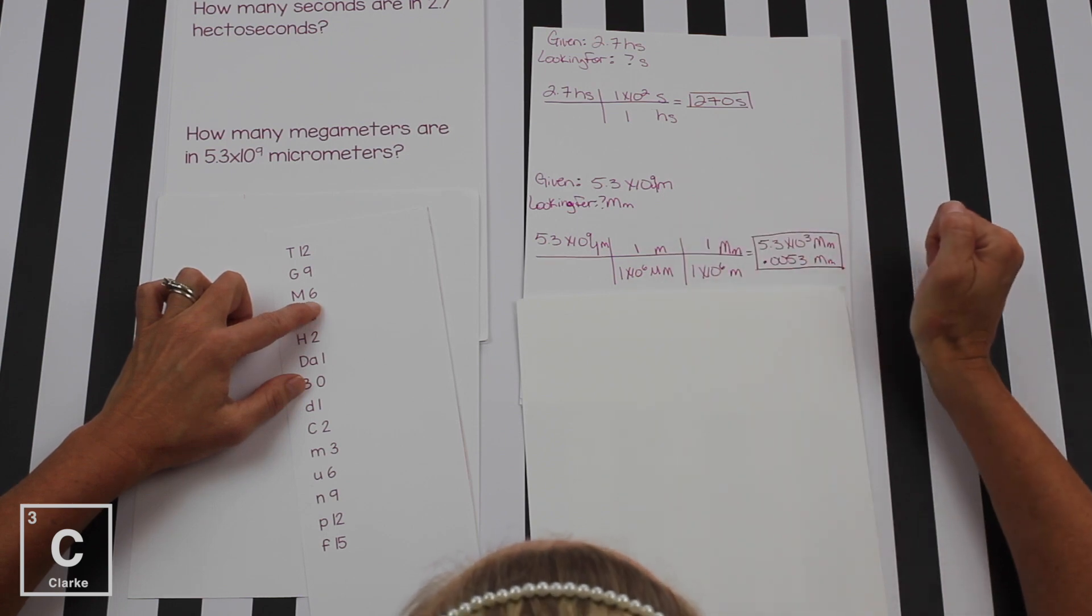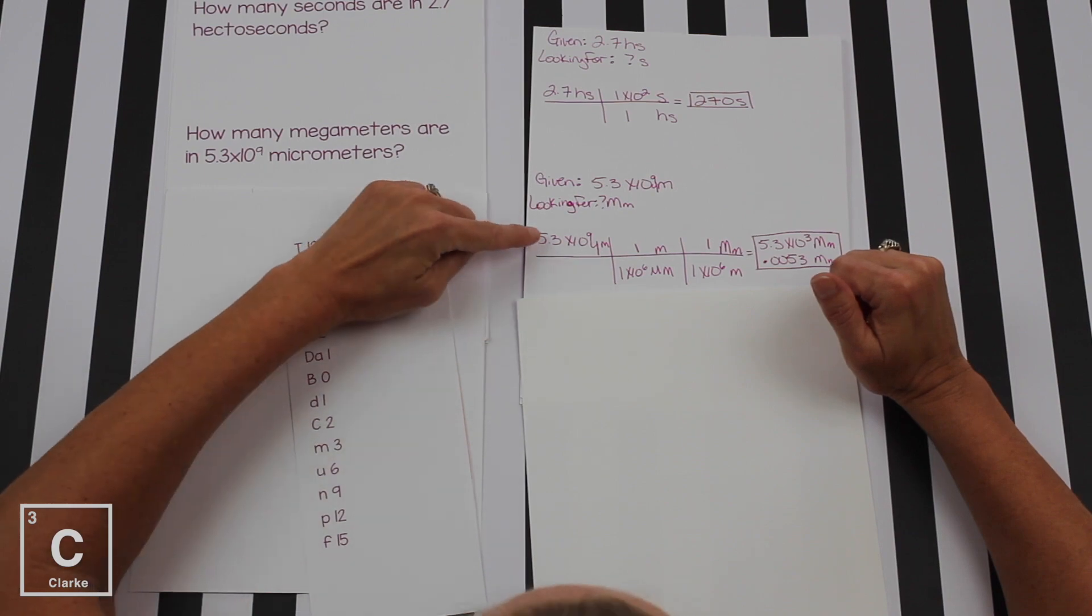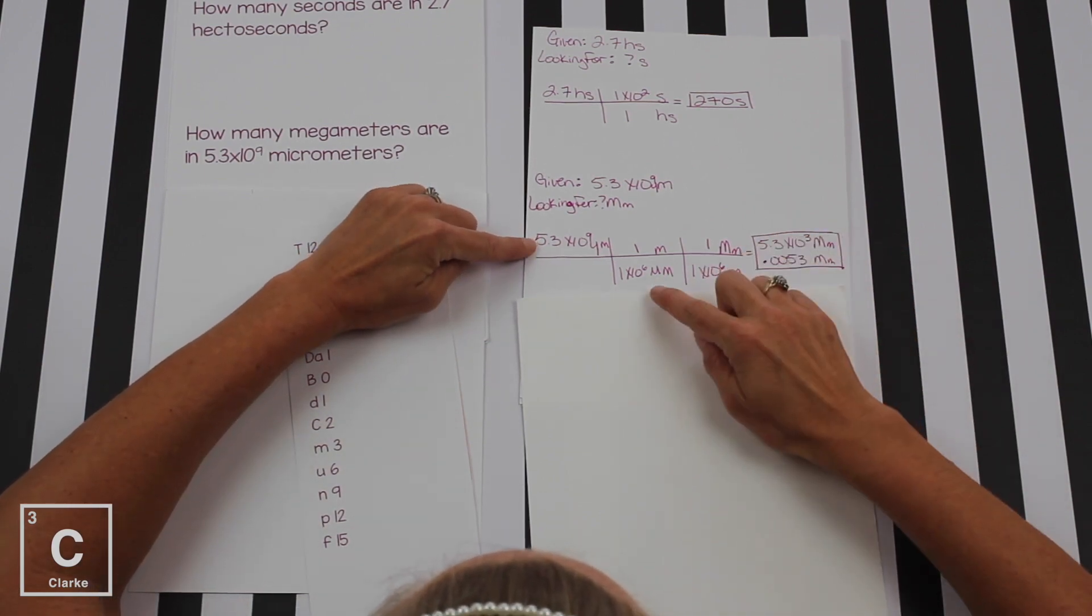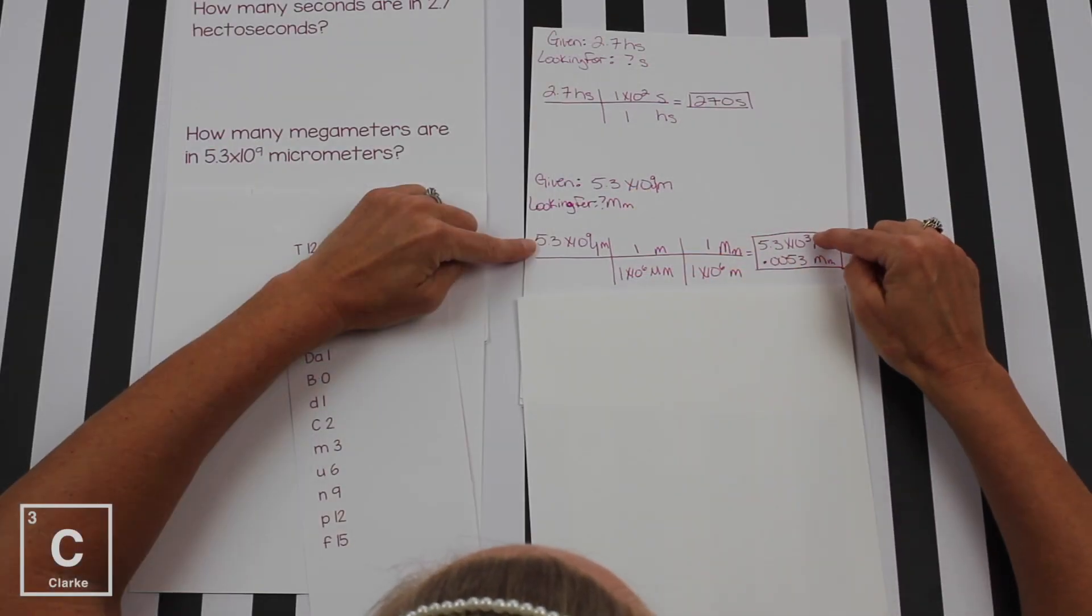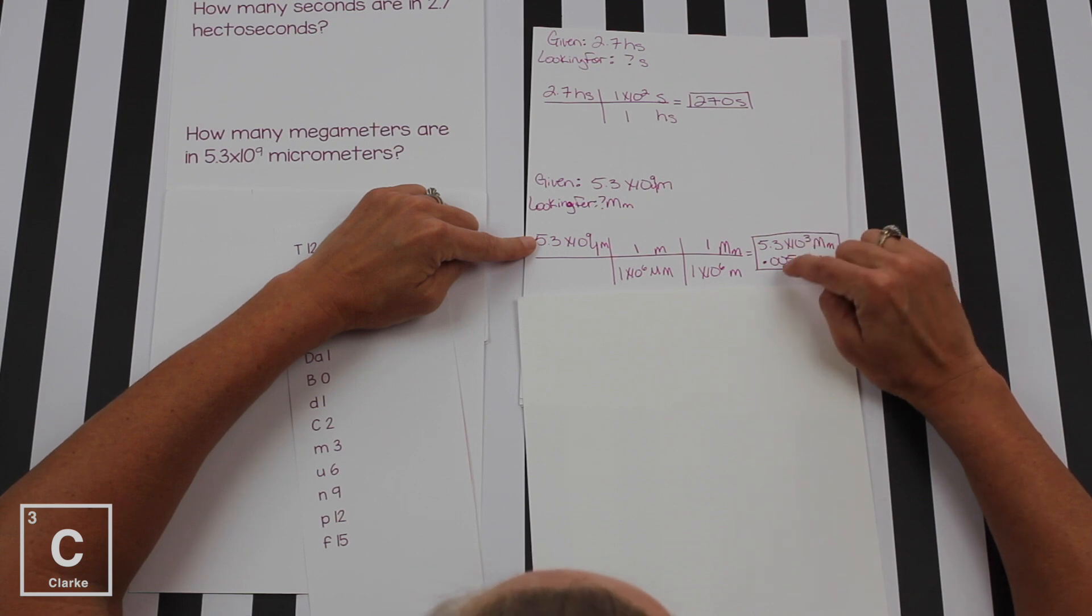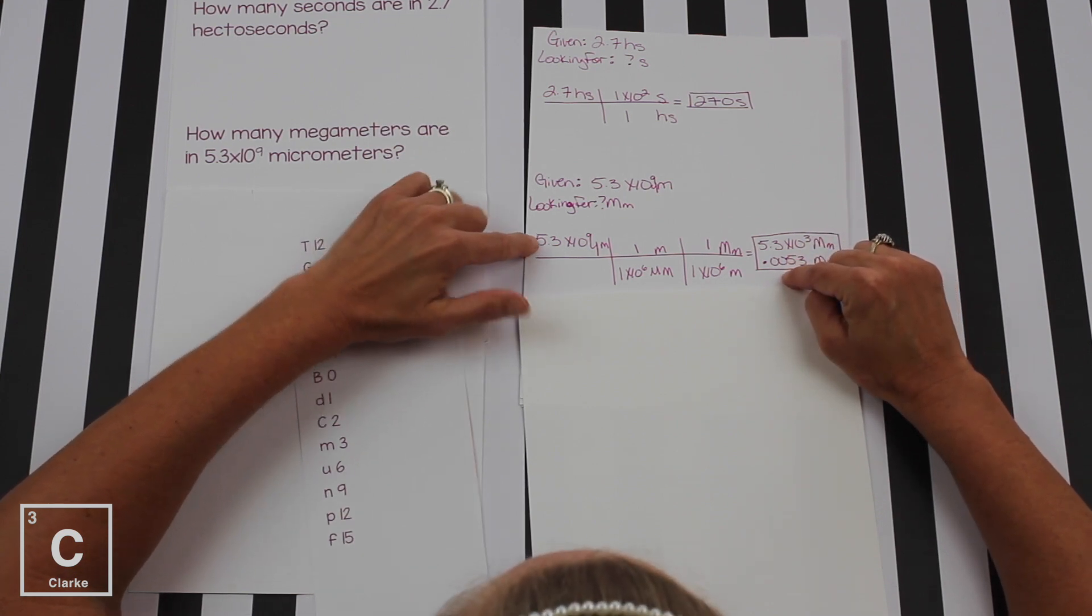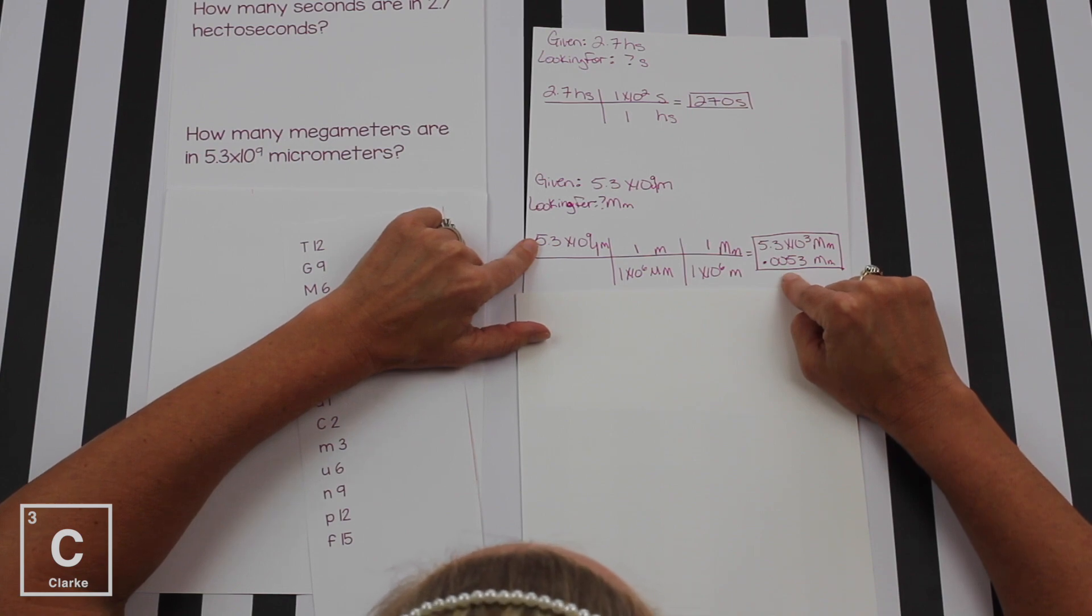Now we're ready to put this in the calculator. Remember, numbers on top you multiply, numbers on bottom you divide. So we're going to put this number in, divide, divide. I know it freaks us out to divide twice in a row, but I promise it's okay. Since our first number was given in scientific notation, I went ahead and gave our answer in scientific notation. But in your calculator, if it's not set to scientific notation, you probably got this answer: 0.0053 megameters. So that's converting metric units, not that big of a deal.